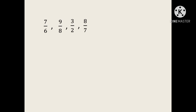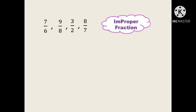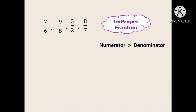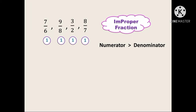Next let us see another problem: 7 by 6, 9 by 8, 3 by 2 and 8 by 7. First, find what type of fractions these are. This is an improper fraction because in all fractions the numerator is greater than the denominator: 7 is greater than 6, 9 is greater than 8, 3 is greater than 2, and 8 is greater than 7. The difference between numerator and denominator is 1 in all cases. With an improper fraction and the same difference, the fraction with the largest numerator is the smallest fraction.